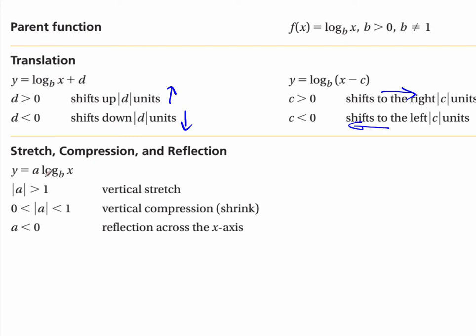If y equals a log base b of x, this is a vertical stretch when the magnitude of a is greater than 1, and a vertical compression when the magnitude of a is less than 1. It's a reflection across the x-axis when a is negative.